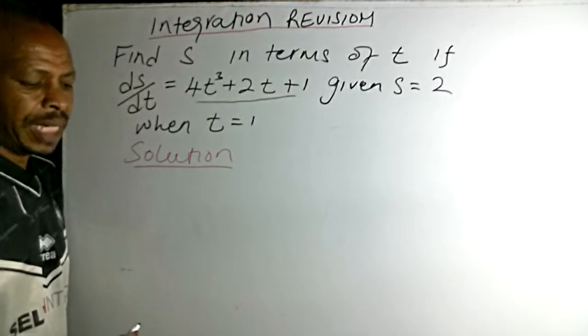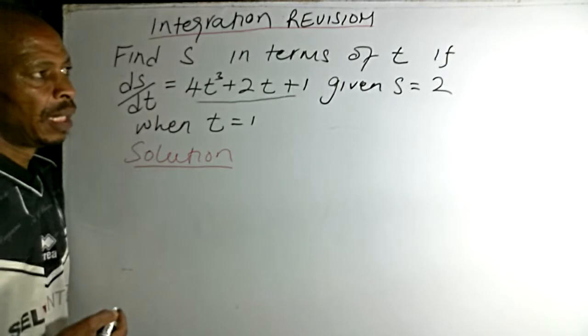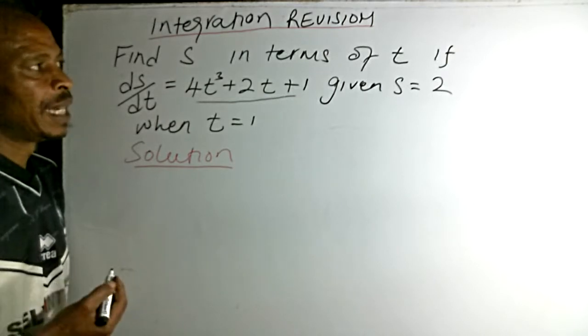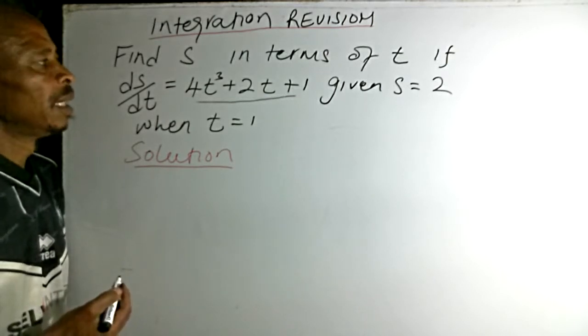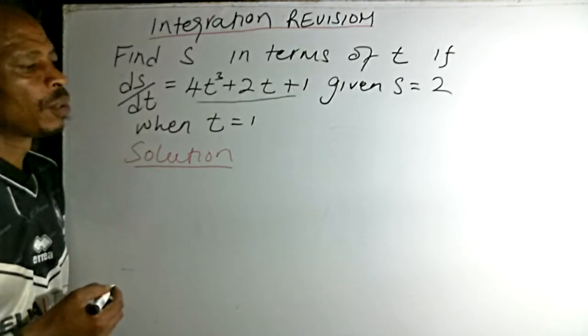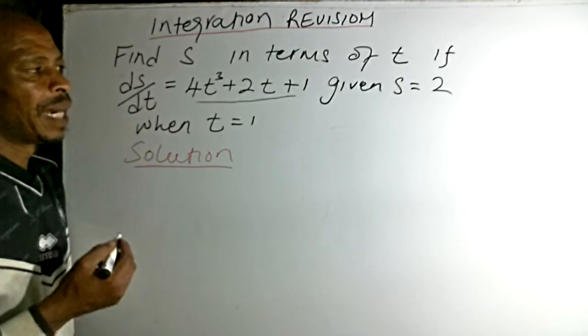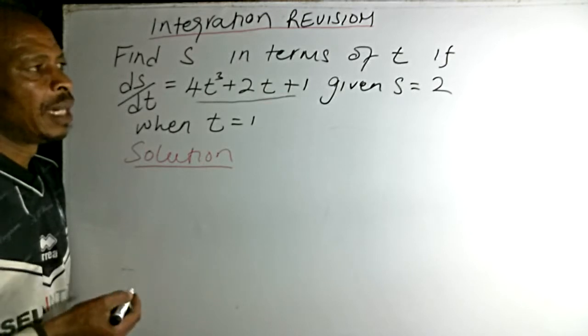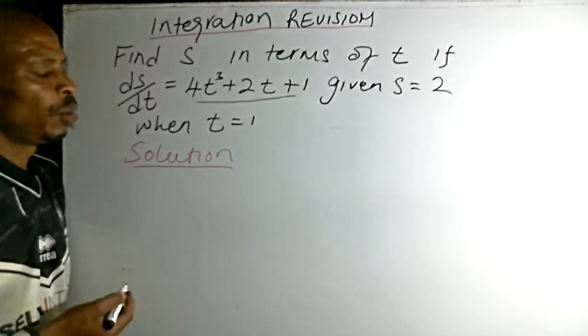This is a question on integration revision. We are told to find s in terms of t if ds/dt equals 4t³ + 2t + 1, given s equals 2 when t equals 1.